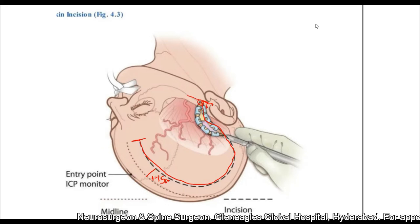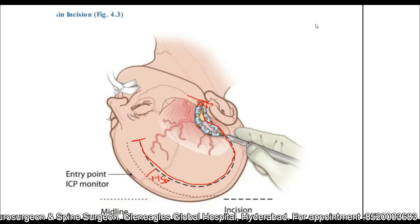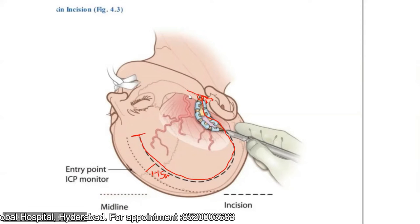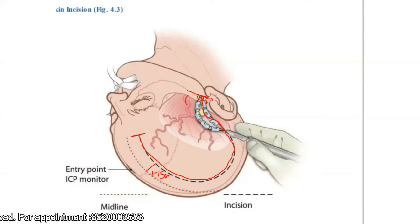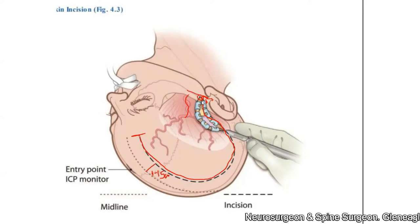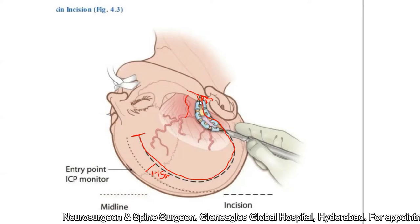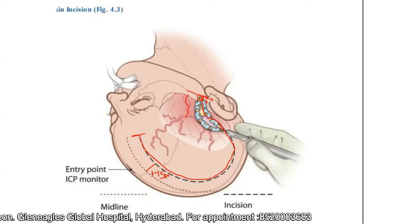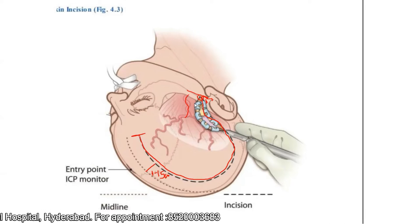One more precaution when taking the incision concerns the superficial temporal artery. In majority of cases, particularly when the patient is lean, you can palpate the superficial temporal artery. When designing an incision, take it in such a way that you spare the superficial temporal artery, as this enhances the viability of the flap.